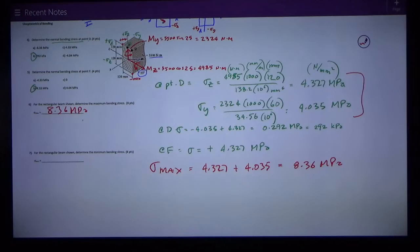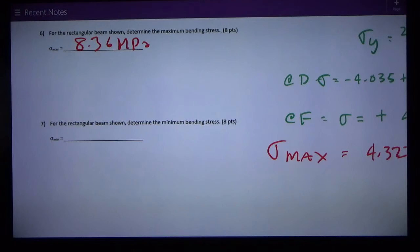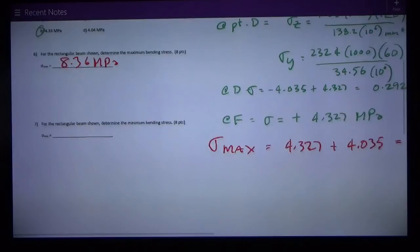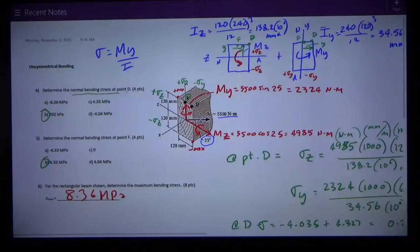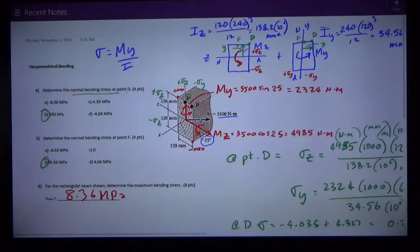Question seven says, for the rectangular beam shown, determine the minimum bending stress. Well the minimum, you can't have less than zero stress. You can have negative, which is compression, but that's more stress than zero. This is to point up the existence of a neutral axis. It's going to be somewhere there near the middle of the section where the neutral axes coincide. Therefore the minimum bending stress is zero, where the neutral axis is.